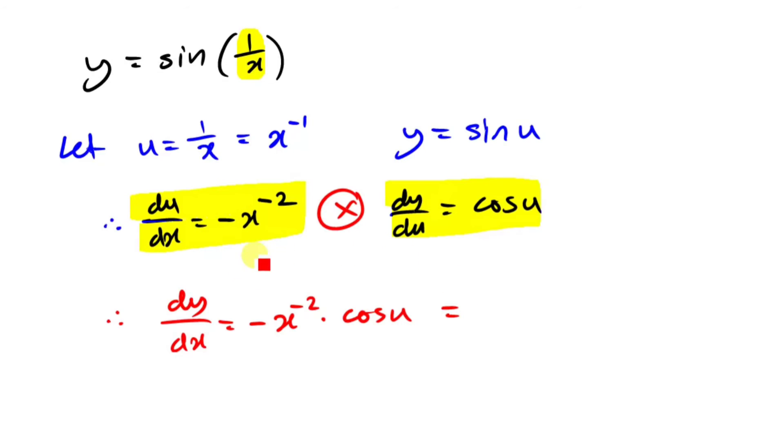for these problems, you must always return the letters they want. So they want in terms of x. So you've got to replace this cos u, this u of x to the negative 1. So it would be minus x to the power of minus 2 cos x to the minus 1.